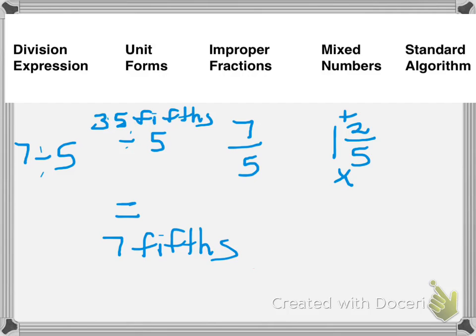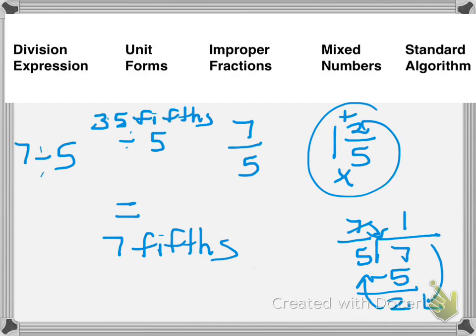So I'm going to go back to my improper fraction, 7/5. And my 7 is going to go diving into the water. 5 goes into 7 one time. 1 times 5 is 5. 7 minus 5 is 2. And I have 1 and 2/5 as the answer. That's how you know you're correct.